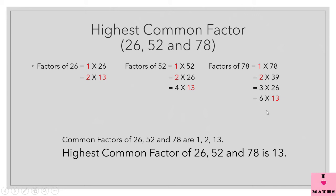In this slide you can see some numbers have been highlighted in red. These numbers are common to all three — they are the factors of all three numbers. So common factors of 26, 52 and 78 are 1, 2 and 13. They have only three common factors. The highest common factor of 26, 52 and 78 is 13, because 13 is the biggest among these three. So we have found the highest common factor of three numbers.